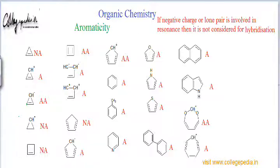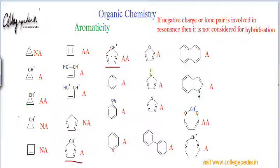The next intermediate is aromatic because all atoms are sp2 hybridized and it follows Hückel's rule. The intermediate after that is anti-aromatic: the condition of planarity is fulfilled since all atoms are sp2 hybridized, but the number of pi electrons is only 4 — from 2 pi bonds, each with 2 electrons. The positive charge contributes no electrons. So the molecule has 4n pi electrons and is therefore anti-aromatic.